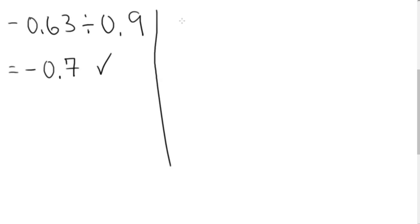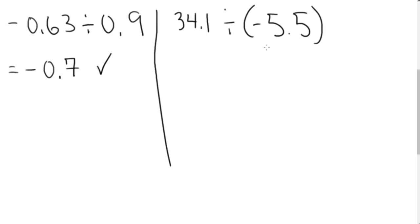You try this one. Pause the video and try the following example: 34.1 divided by negative 5.5. If you went through the thought process and said a positive divided by a negative is a negative, then on the calculator that comes out to be negative 6.2.